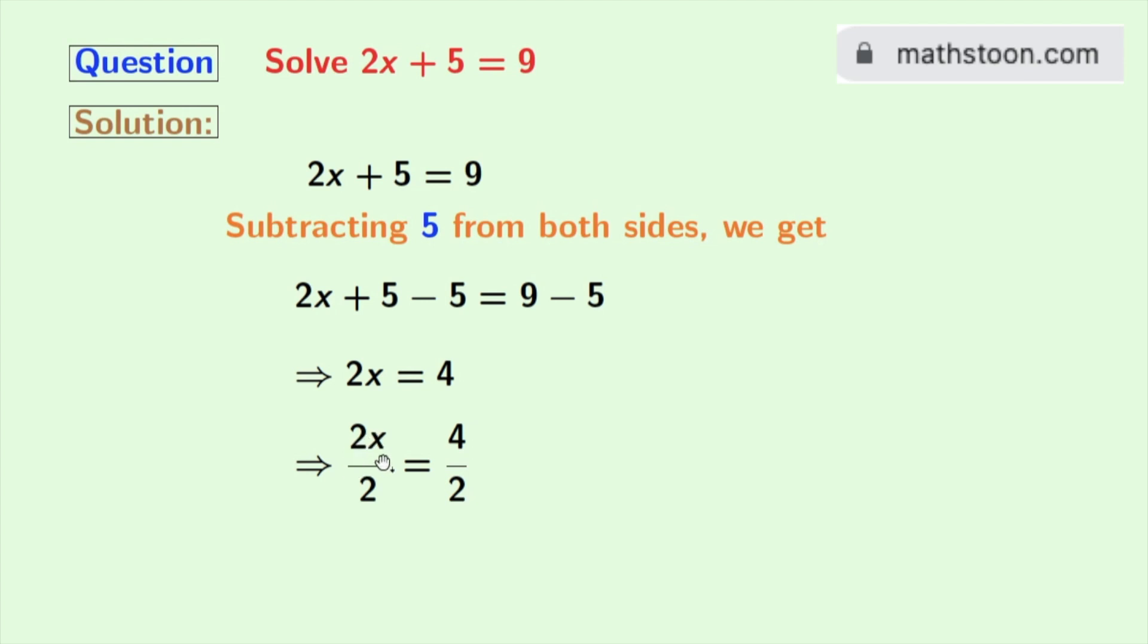In the left hand side, 2 gets cancelled and we are left with x. And in the right hand side, 4 by 2 gives us 2. So finally we have x is equal to 2 as our answer.